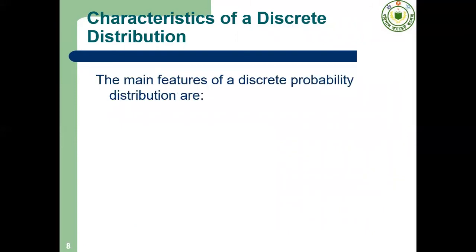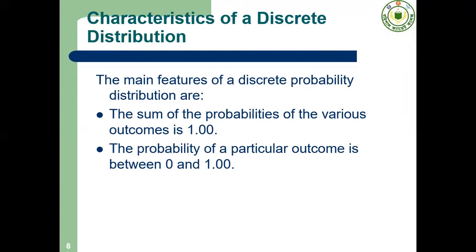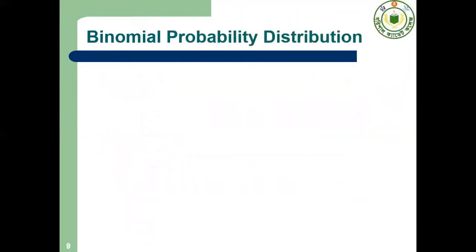Dear cadets, there are some characteristics of discrete distribution. Number one: the sum of the probabilities is equal to 1. Number two: the probabilities lie between 0 and 1. Number three: the outcomes are mutually exclusive.